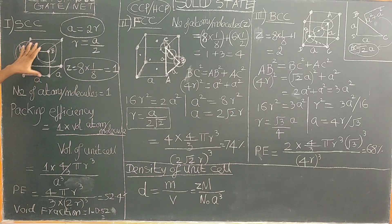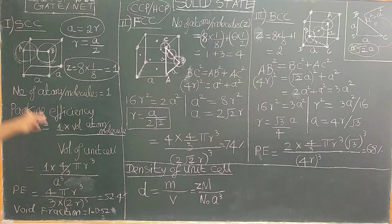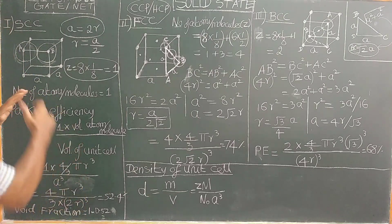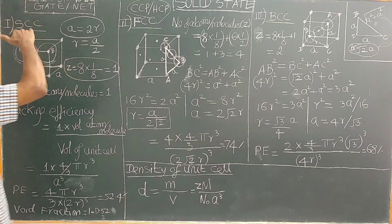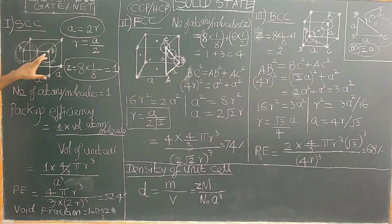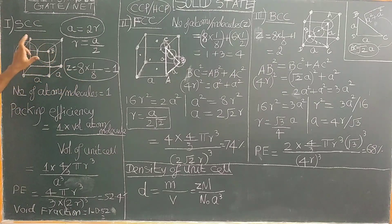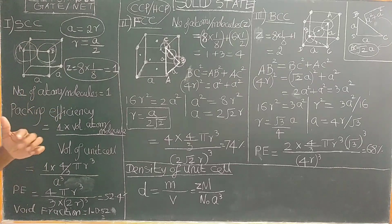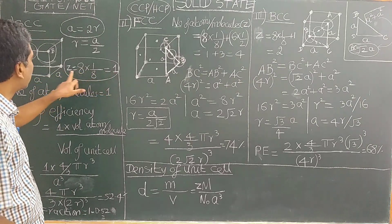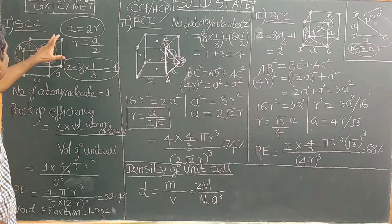Let us imagine you have a cube. In a crystalline solid, there will be long range order, whereas in amorphous solid, short range order is present. The atom at the corner is shared by eight other cubes. Therefore, there are eight atoms at the corners, each contributing one-eighth, so eight times one-eighth equals one. The number of atoms in the simple cubic unit cell is one.